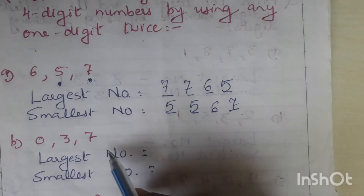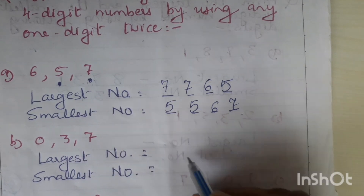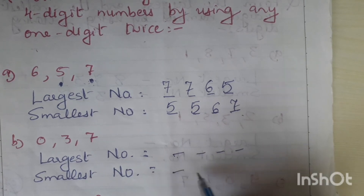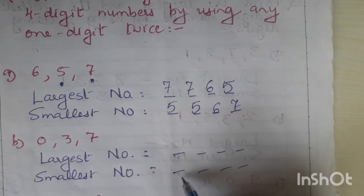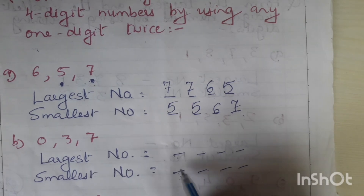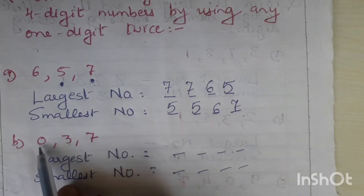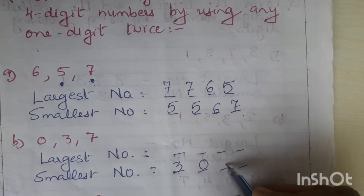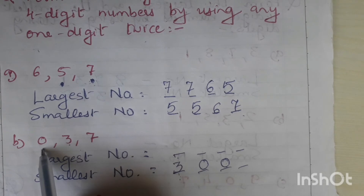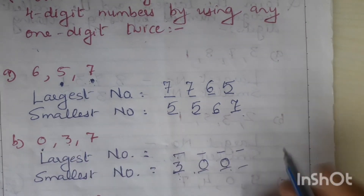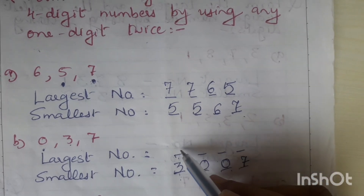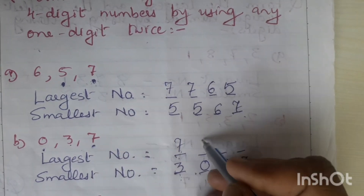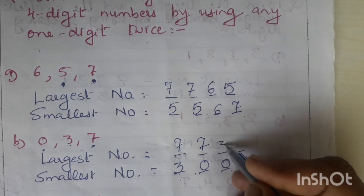The second question uses digits 0, 3, 7. For the smallest number, 0 cannot take the leftmost place, so 3 is the leftmost digit. Repeat 0 twice: 3, 0, 0, 7. For the largest number, repeat the highest digit — 7 — twice: 7, 7, 3, 0.